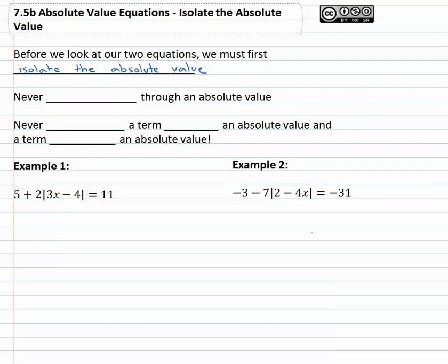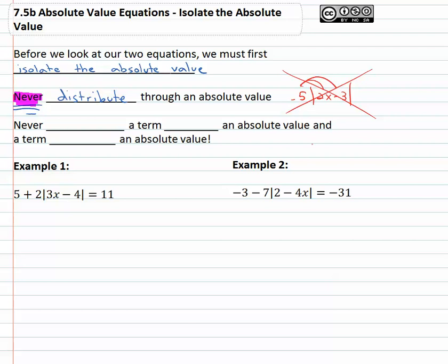As we get that absolute value alone so we can do the positive or negative thing, we have to remember a couple of things to avoid that can get us in trouble. First, we will never, ever distribute through an absolute value. If I have something like five times the absolute value of two x minus three equals negative five, we cannot distribute through the absolute value. That does not work.